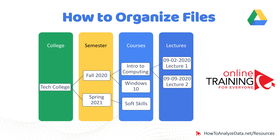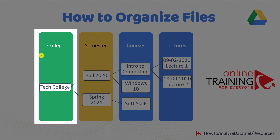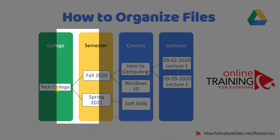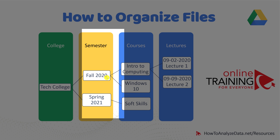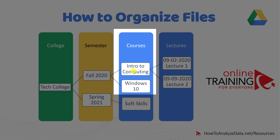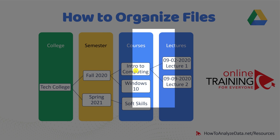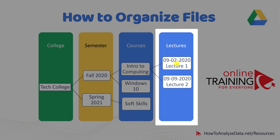Typically, the best way is the way that works for you to find what you're looking for quickly. Google Drive supports a hierarchical folder structure. For example, you might be studying at a technical college — that might be your root folder. You might have multiple semesters: fall 2020 and spring 2021. In fall 2020, you might be taking Introduction to Computing and Windows 10, and in Introduction to Computing, you would have multiple lectures.